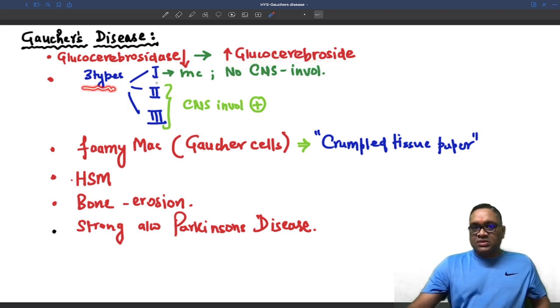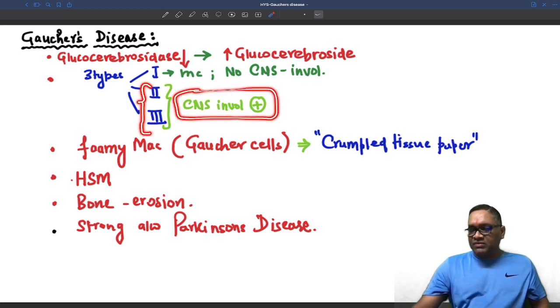There are three types of Gaucher's: type 1, type 2, and type 3. Type 1 is the most common type with no CNS involvement. Types 2 and 3 are less common and have CNS involvement.